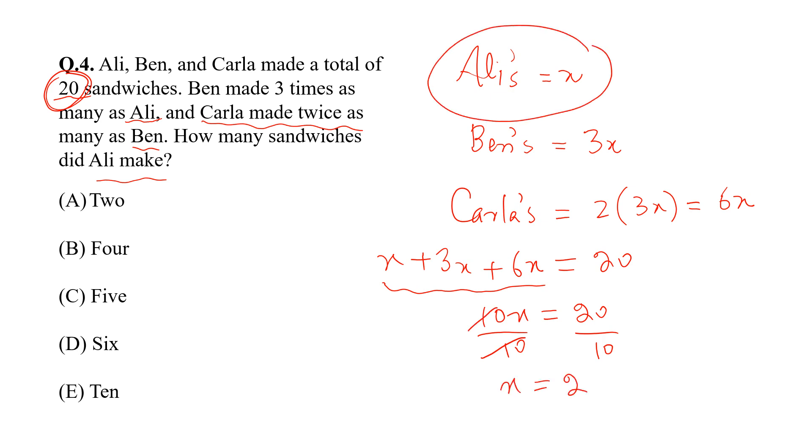So X is Ali's sandwiches, so the correct option is A.